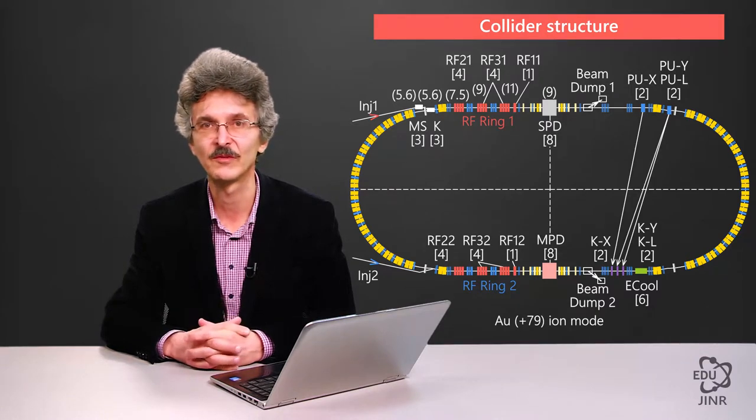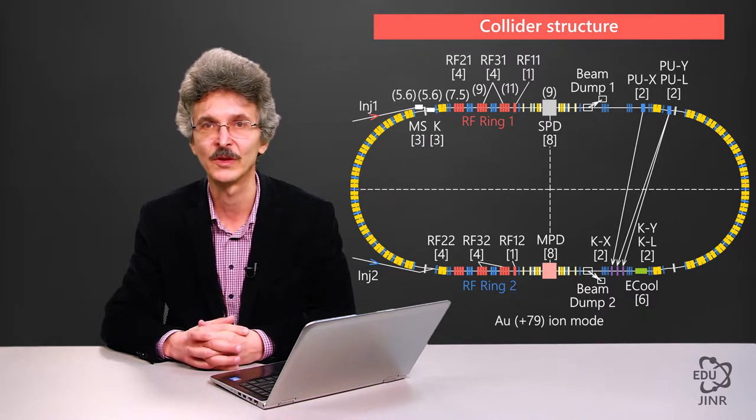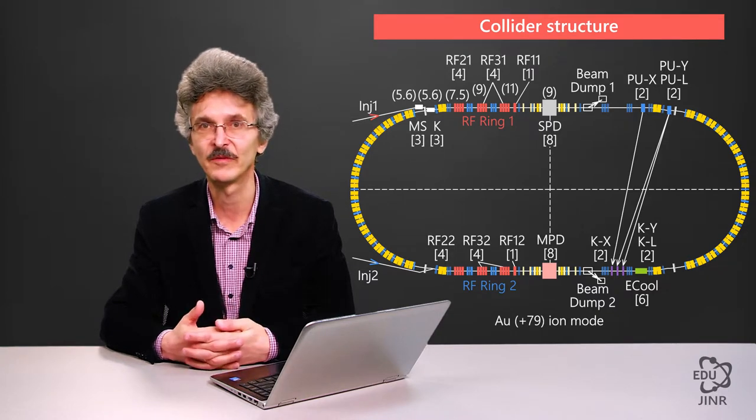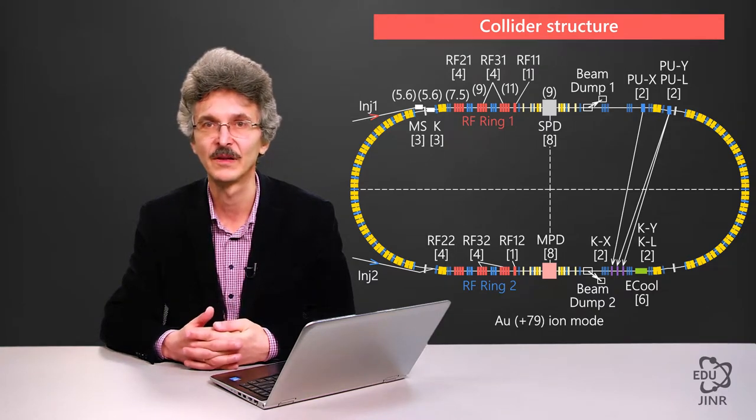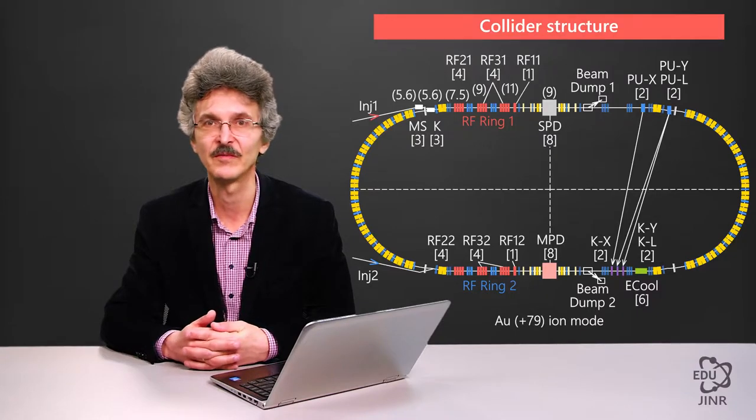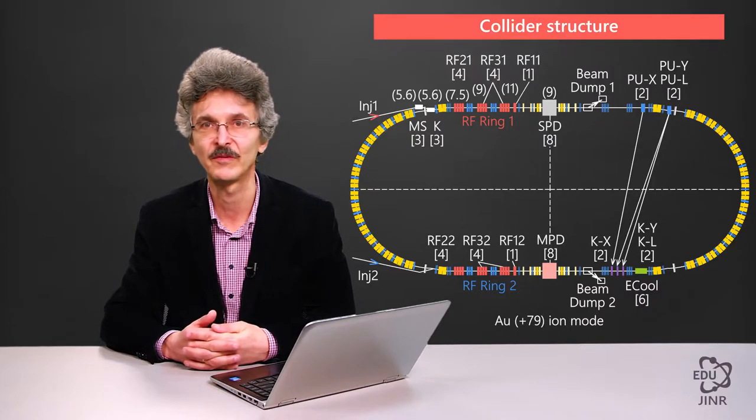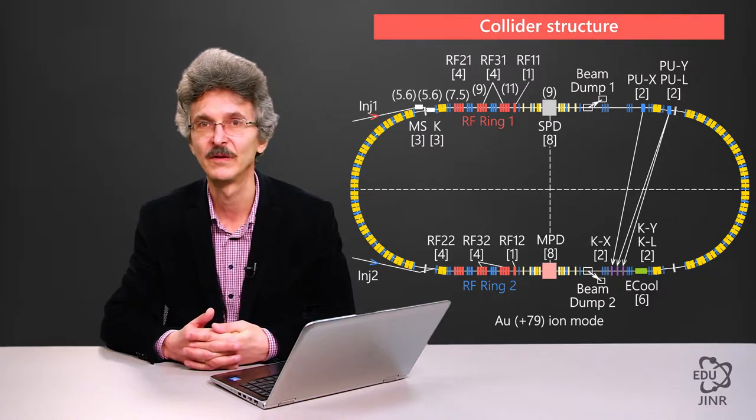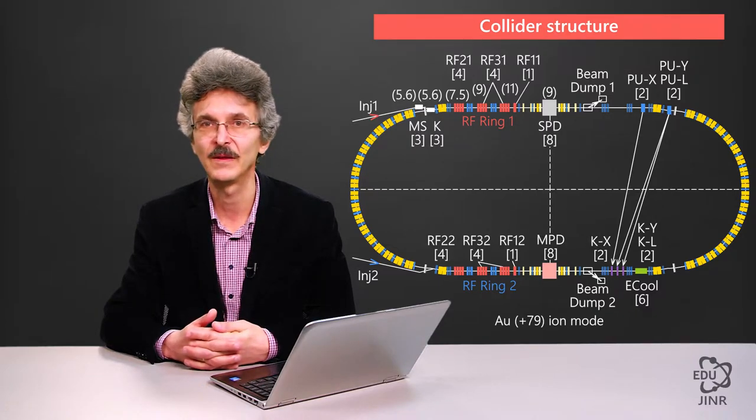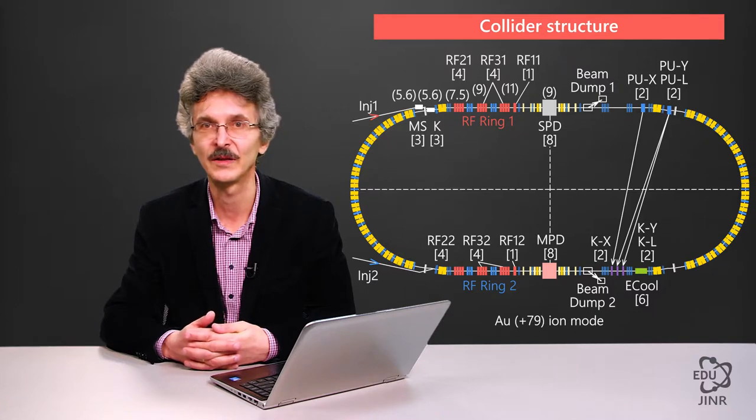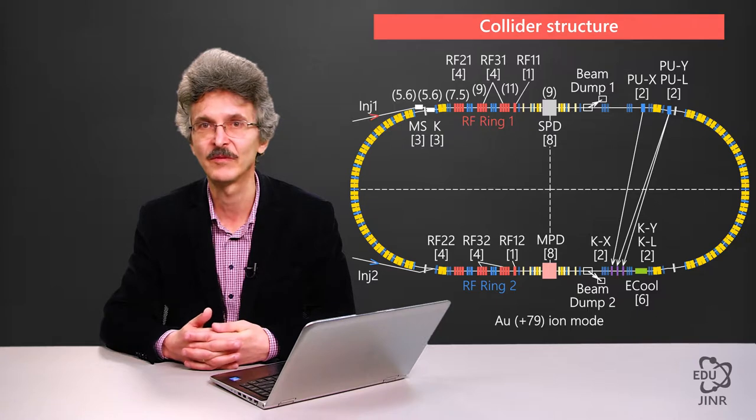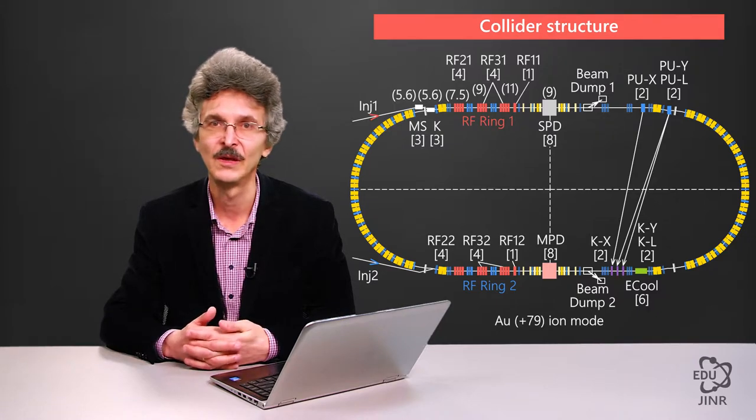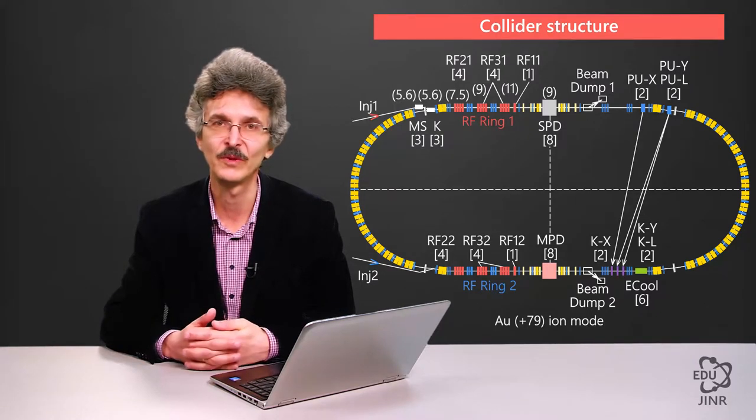Why has the RF system turned out to be so complex? Beam accumulation is performed using special resonator types, the so-called barrier resonators, which create a non-sinusoidal field in its gap and divide the collider circumference into fields of stable and unstable motion.